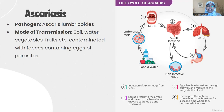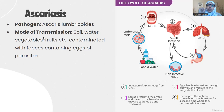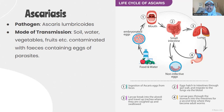The pathogen name is Ascaris lumbricoides — a roundworm or nematode. The mode of transmission of ascariasis is through contaminated soil, water, vegetables, and fruits with stools. If these contaminated things come in contact with a healthy individual, that individual might develop ascariasis.